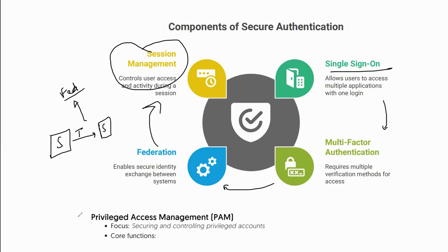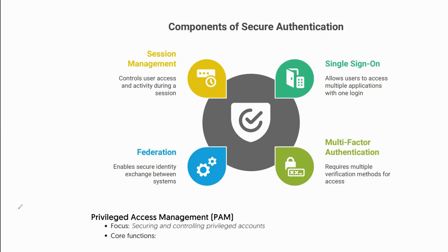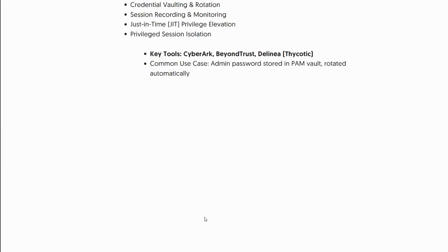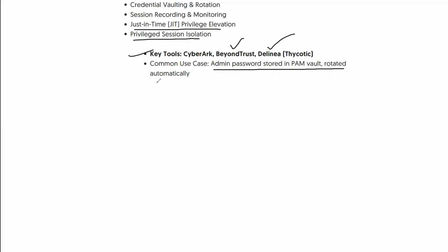Now let's talk about Privilege Access Management. PAM primarily focuses on securing and controlling privileged accounts. Its core functionalities include credential vaulting and rotation, session recording and monitoring, just-in-time privilege access and elevation, and privileged session isolation. Key tools in the market include CyberArk, BeyondTrust, Delinea, and Sectona. A common use case is admin passwords stored, vaulted, and rotated automatically in PAM.